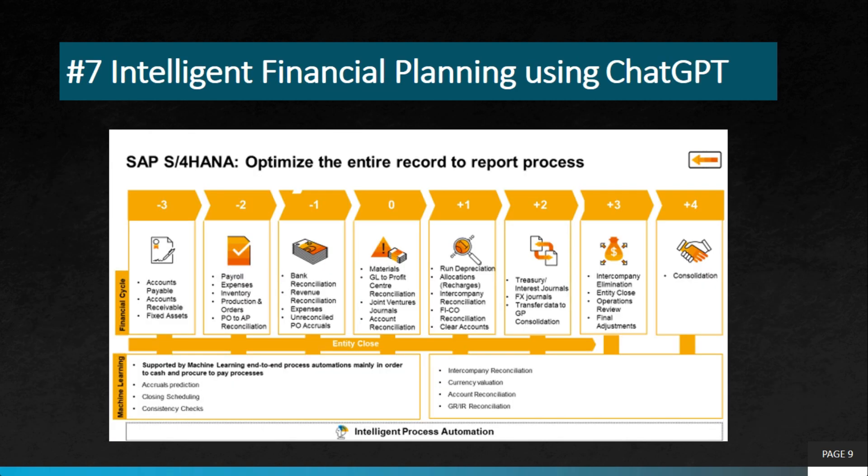The next project is intelligent financial planning using ChatGPT. This project aims to create a financial planning model that incorporates multiple data sources using ChatGPT. The model can provide accurate and informed financial advice by analyzing financial data and using machine learning algorithms, helping businesses make more accurate and informed financial decisions.